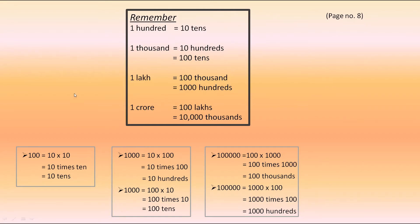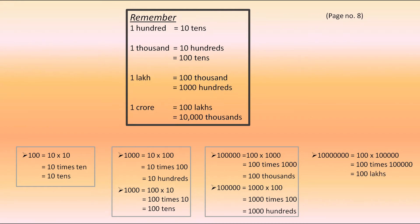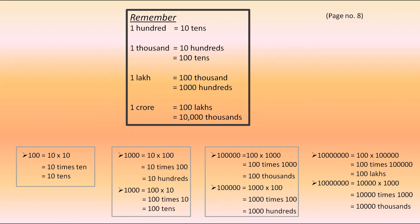The next point says that 1 crore is equal to 100 lakhs, which is also equal to 10,000 thousands. So, 1 crore is equal to 100 into 1 lakh, which can be written as 100 times 1 lakh — that means 100 lakhs. They have also told 1 crore is equal to 10,000 thousands. 1 crore equals 10,000 into 1,000 — we can also say 10,000 times 1,000 — so 1 crore is equal to 10,000 thousands.